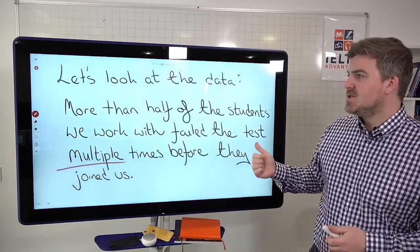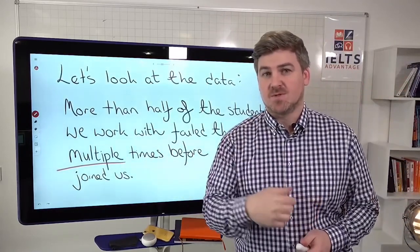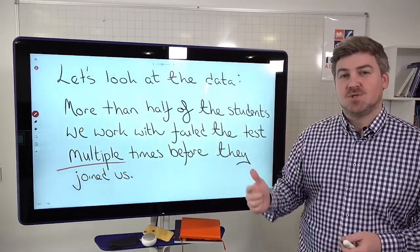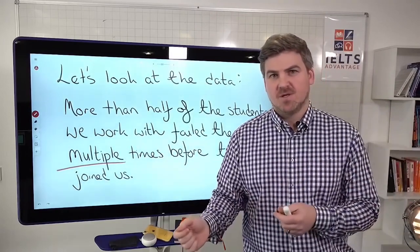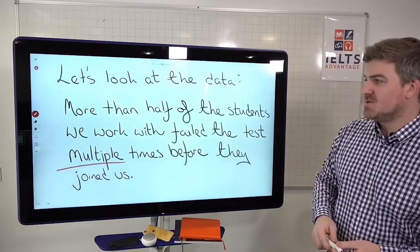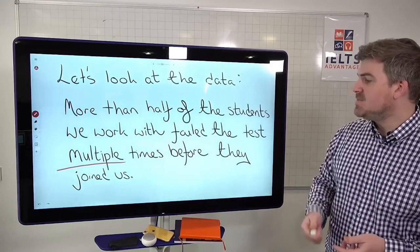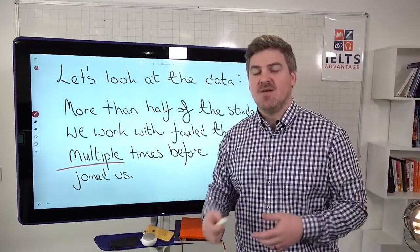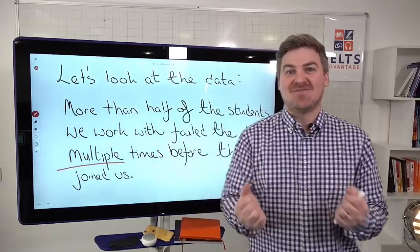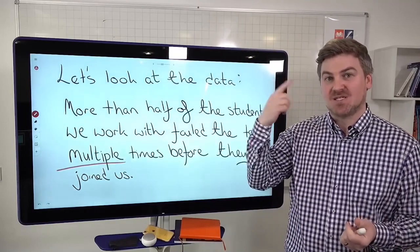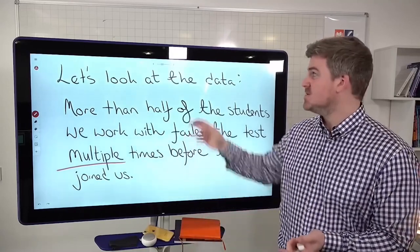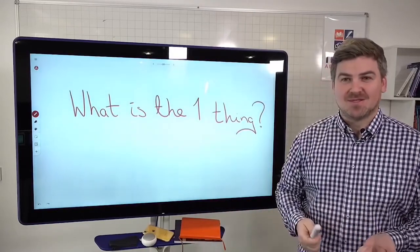But let's look at the data. So we looked at the data from our VIP course, the course that really does help people. And we looked at how many times students did the test before they joined us. So when people join the course, we ask them for some data. More than half of the students we work with failed the test multiple times before they joined us. Failed over and over and over again until they felt that pain of, okay, now I have to actually change something. And it wasn't until they changed this and started doing this one thing that they got on the road to success. So what is that one thing, the one thing that you can change?